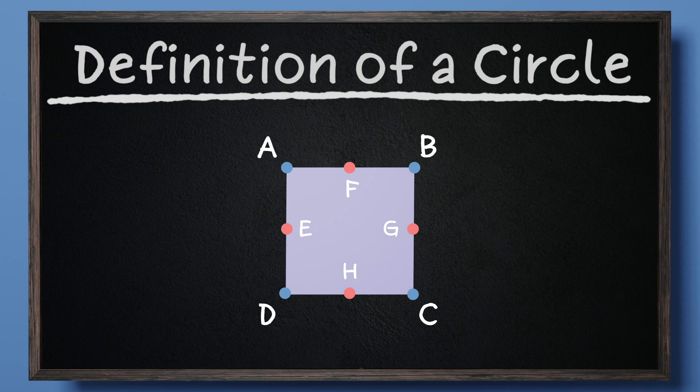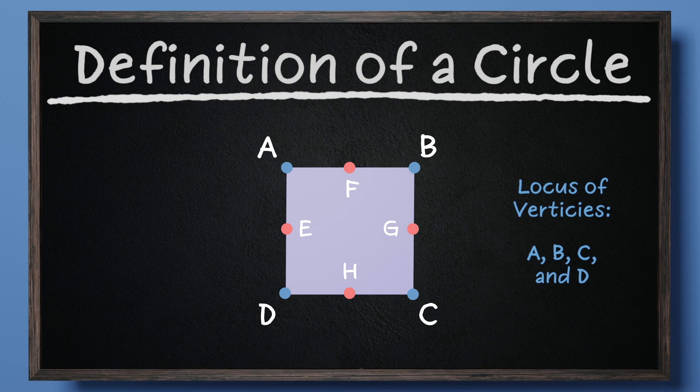Points E, F, G, and H are the locations of each midpoint along the sides of the square. The locus of vertices of this square includes only A, B, C, and D.